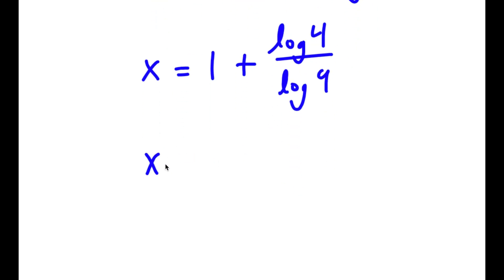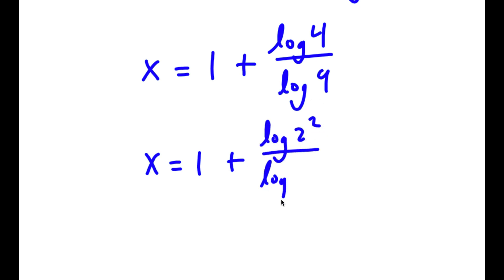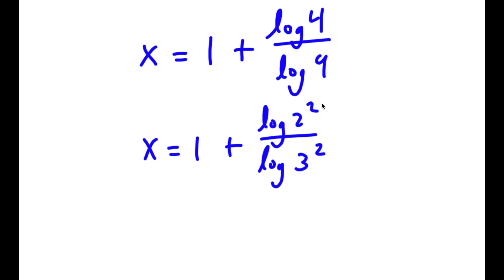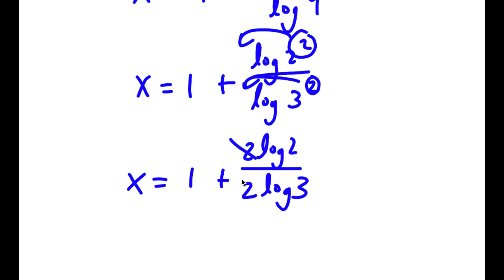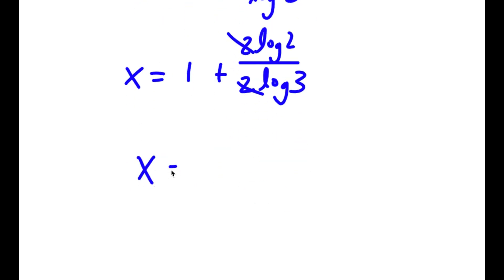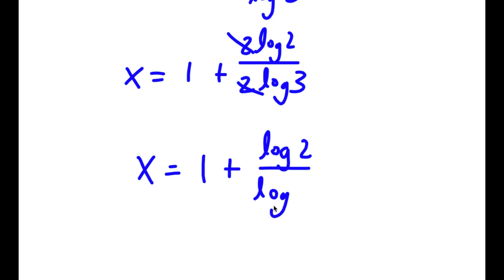And log 4 is the same thing as log of 2 squared, and log 9 is the same thing as log of 3 squared. So now I can move 2 to the front. So now I have x is equal to 1 plus 2 times log 2 over 2 times log 3. Now these two 2s cancel out, so now I have x is equal to 1 plus log 2 over log 3.